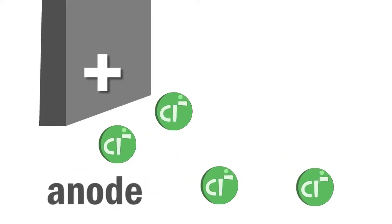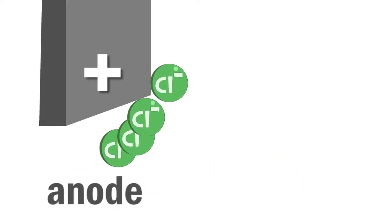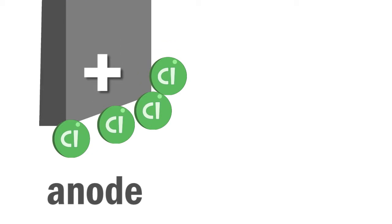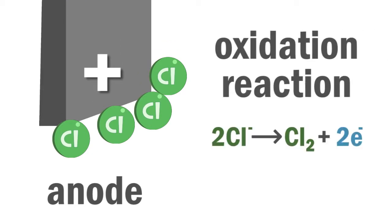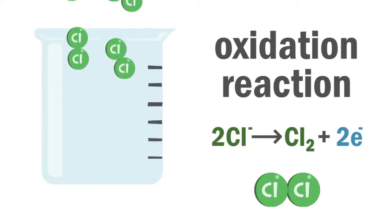At the anode or positive electrode, the chloride ions will each give up an electron and become a neutral chlorine atom. This is an oxidation reaction. The single chlorine atoms then pair up to form chlorine molecules and chlorine gas is produced.